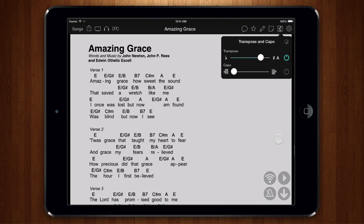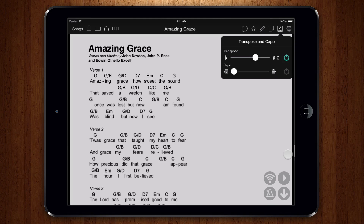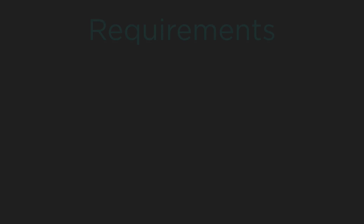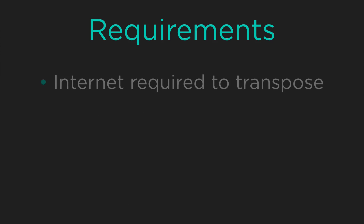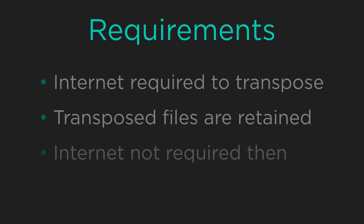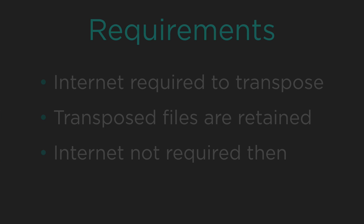OnSong retrieves the new version of the PDF file from SongSelect and stores it in your library. This means you do need to be connected to the internet the first time you choose a key. But the second time the file is retrieved in that key, it's pulled directly from your library without the need of an internet connection.